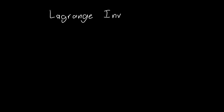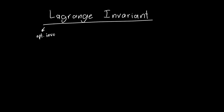In this video we're going to be talking about the Lagrange invariant in optical systems and in particular how this relates to Fourier optics. This is also known as the optical invariant — the optical invariant being a slight generalization of the Lagrange invariant, though it goes by other names as well. My favorite way of thinking of the Lagrange invariant is as conservation of information.